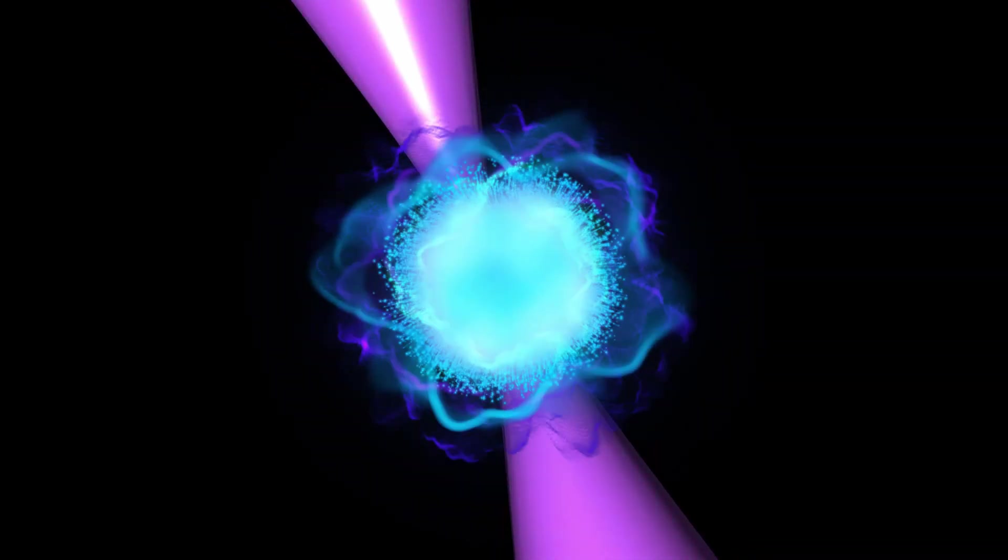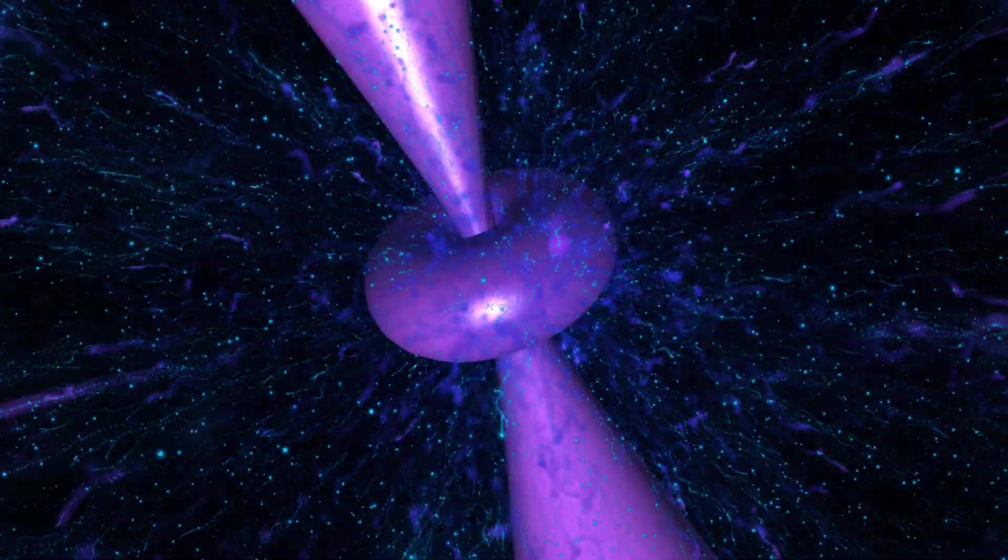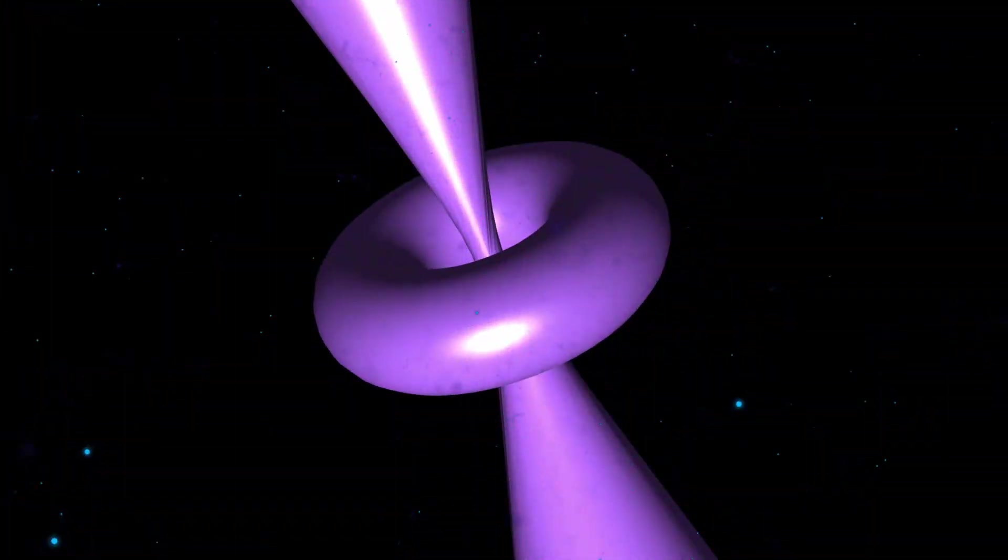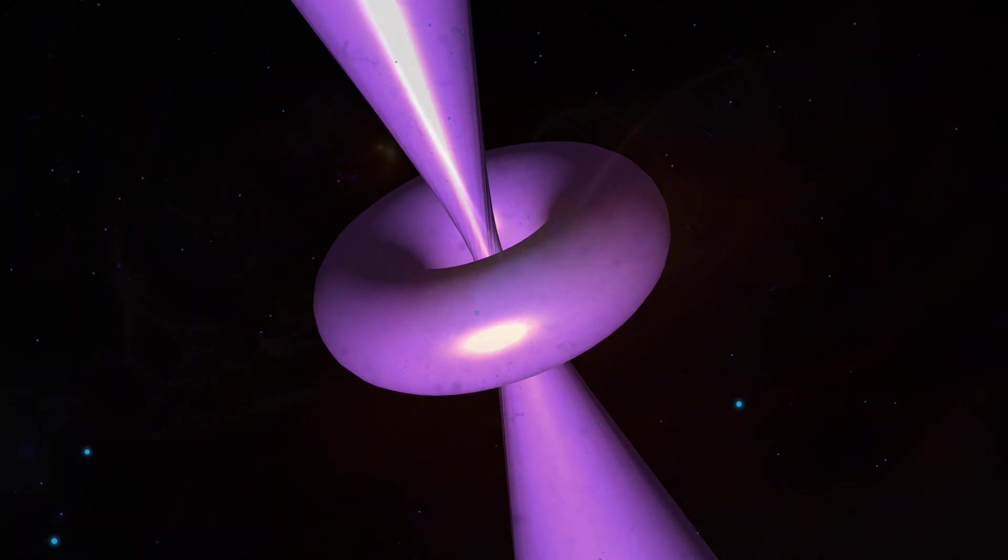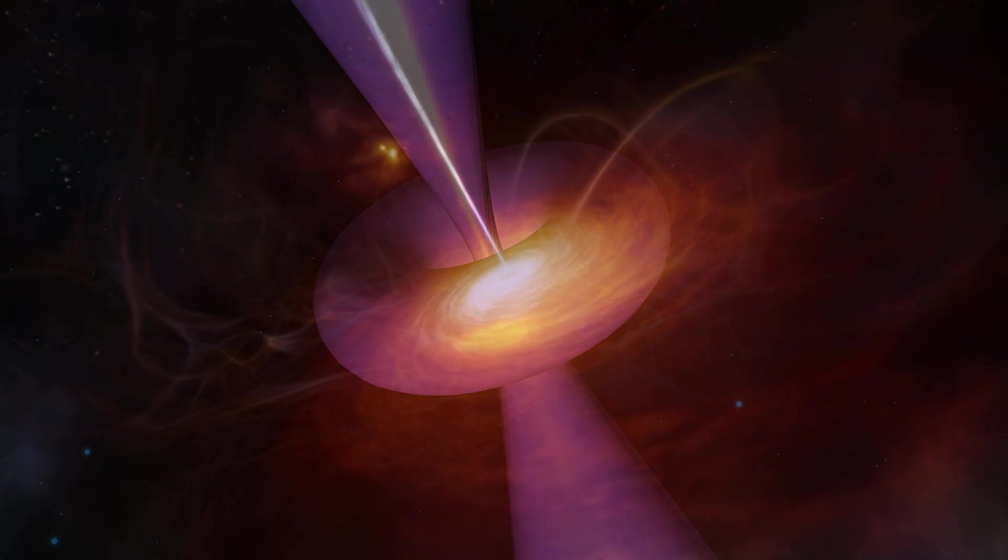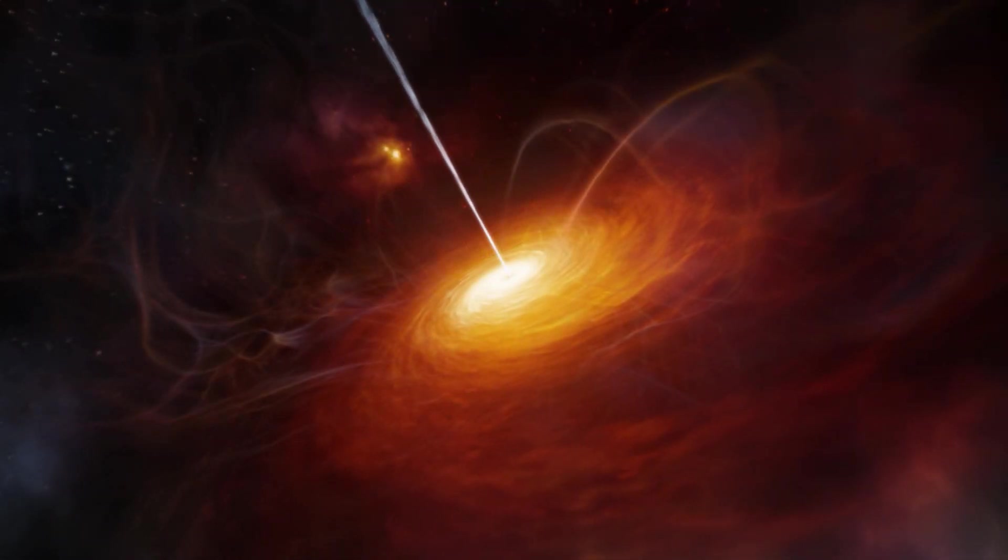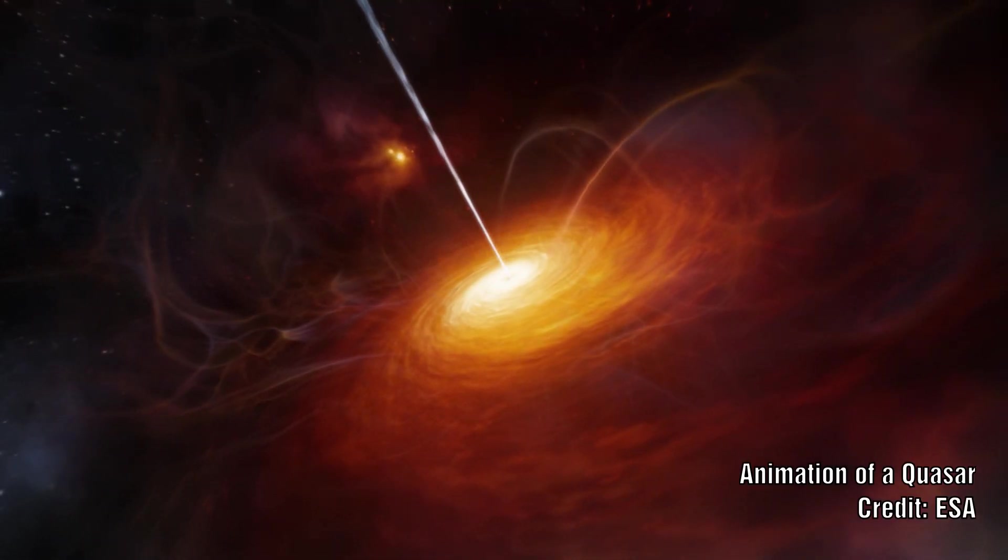Another possibility is the plasmoid formed in a Z-pinch. The question then is what are the dynamics of this entity? If the Birkeland current draws the material for the formation of the plasmoid and the subsequent galaxy, then why do we not see this inflow of material in other young galaxies or quasars?